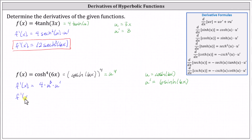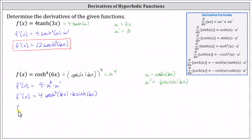This gives us f prime of x equals four times the cube of hyperbolic cosine of six x, times u prime, which is six hyperbolic sine of six x. Simplifying, four times six is 24, giving us 24 times the cube of hyperbolic cosine of six x, times hyperbolic sine of six x.